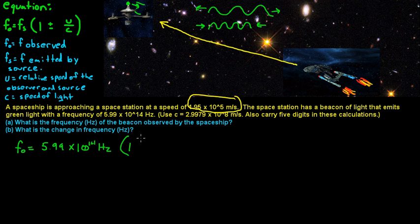Now it's real easy. If the observer is moving towards the source, or these two are coming together and they're getting closer, you're always going to use a positive sign. If the spaceship were going away, or the source were going away, then you would use a minus sign. So they're going towards, so we use a plus.